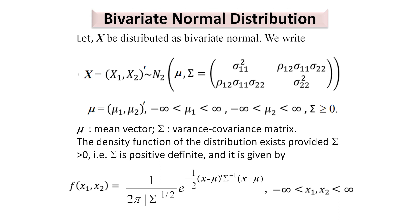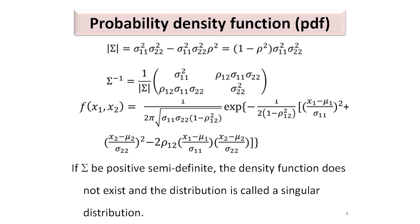The density of the bivariate normal distribution can be defined if sigma is positive definite, which we denote as sigma strictly greater than 0. In that case, the density function is given by f(x1, x2). If we find the determinant of sigma and sigma inverse, we can write down the joint density of x1 and x2. When sigma is positive semi-definite but not positive definite, the density function will not exist and we call it a singular distribution.